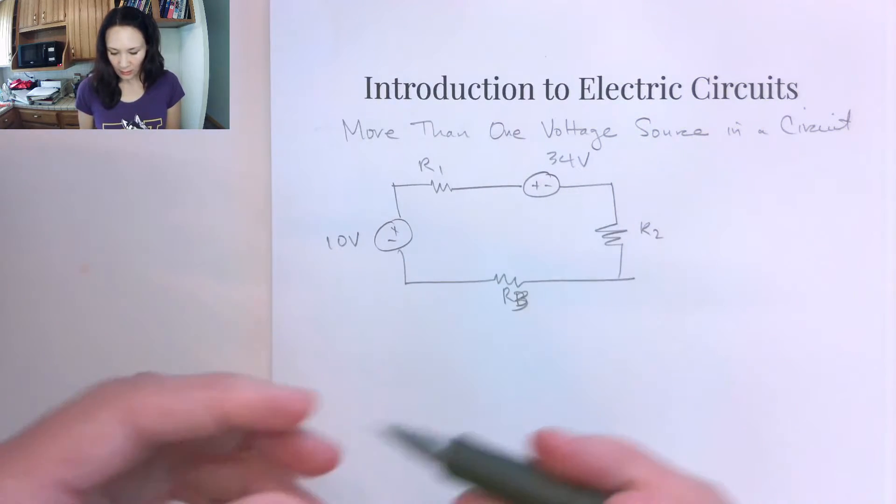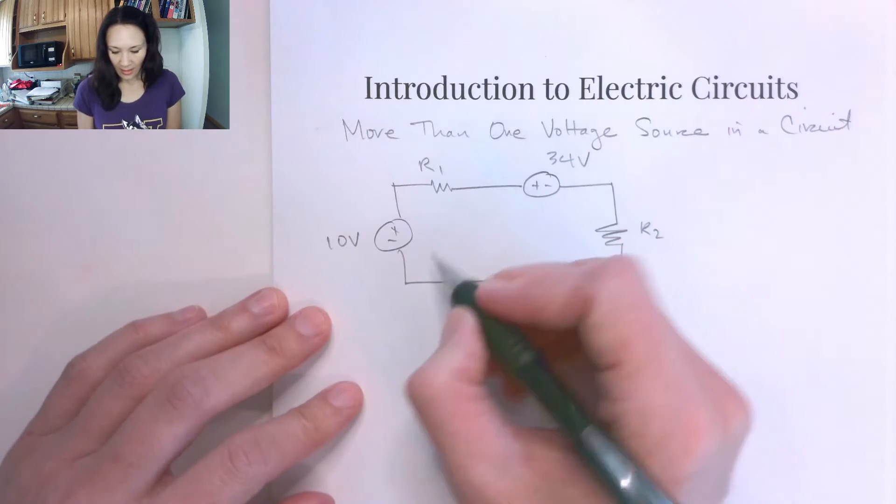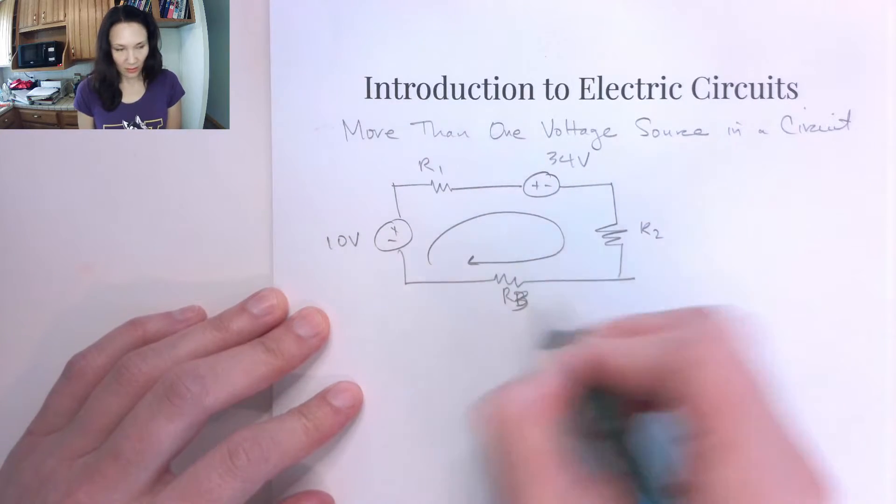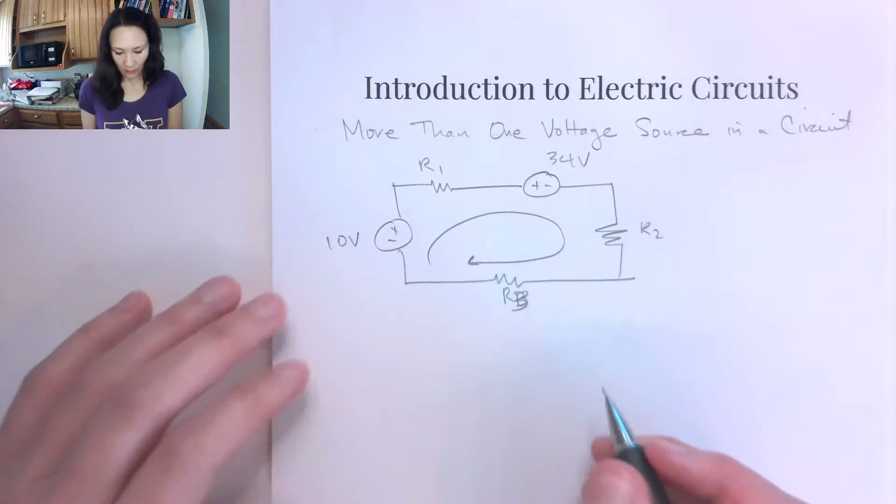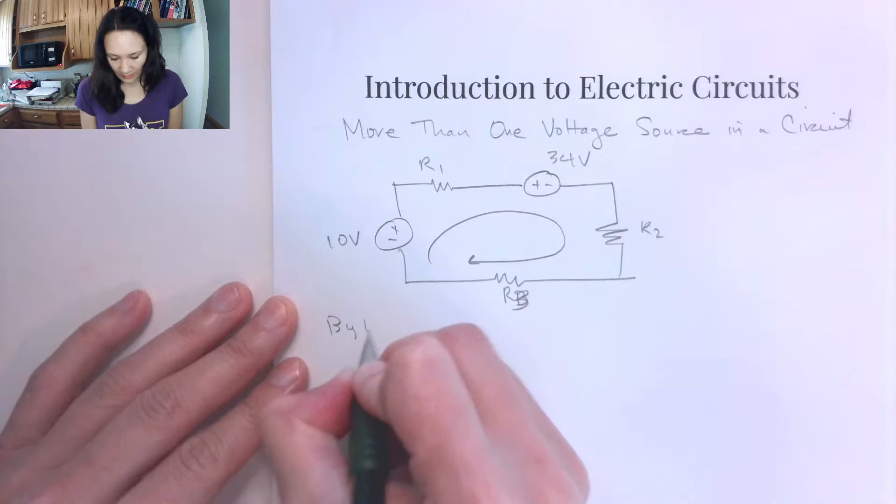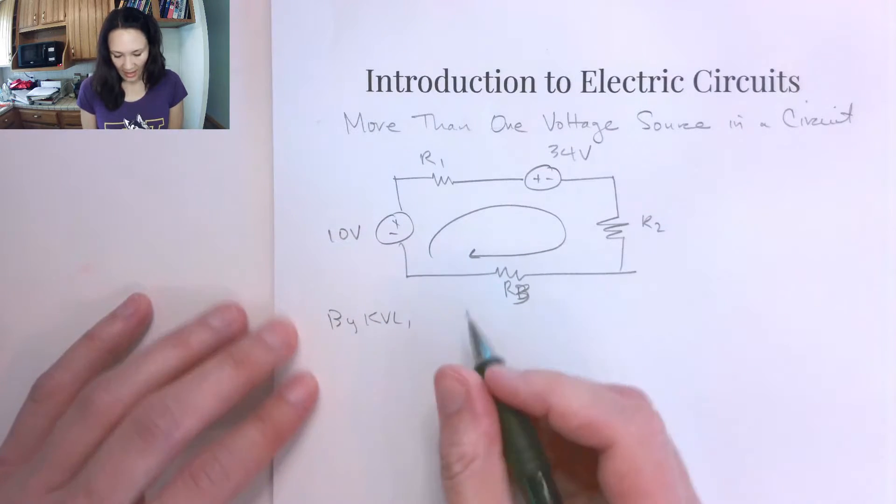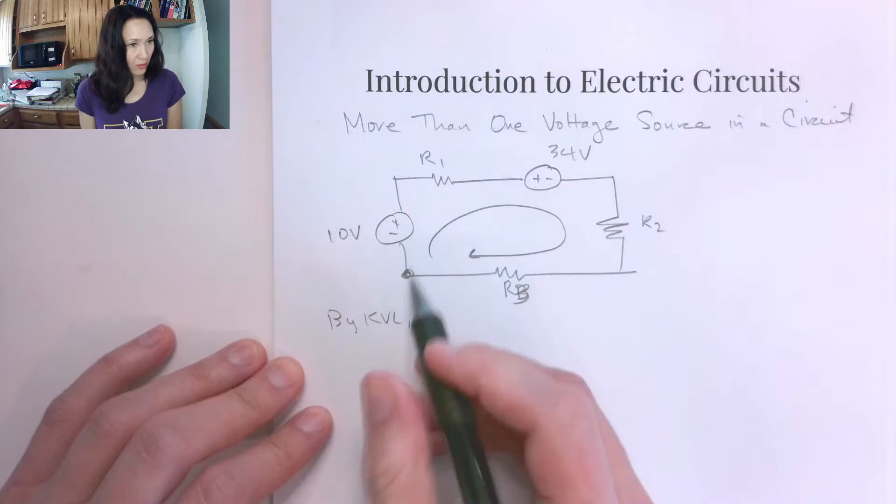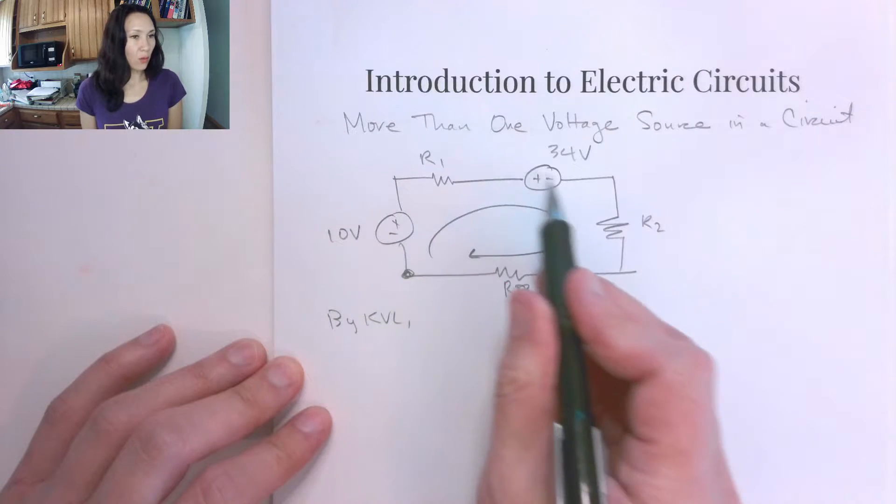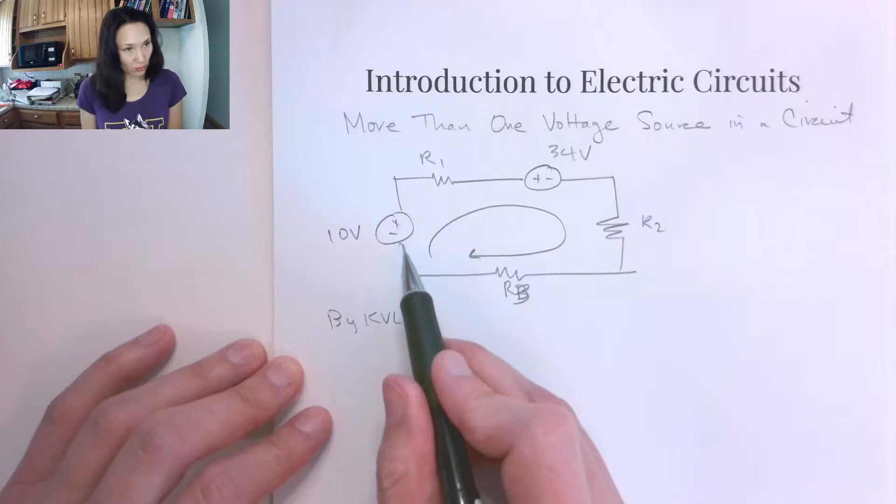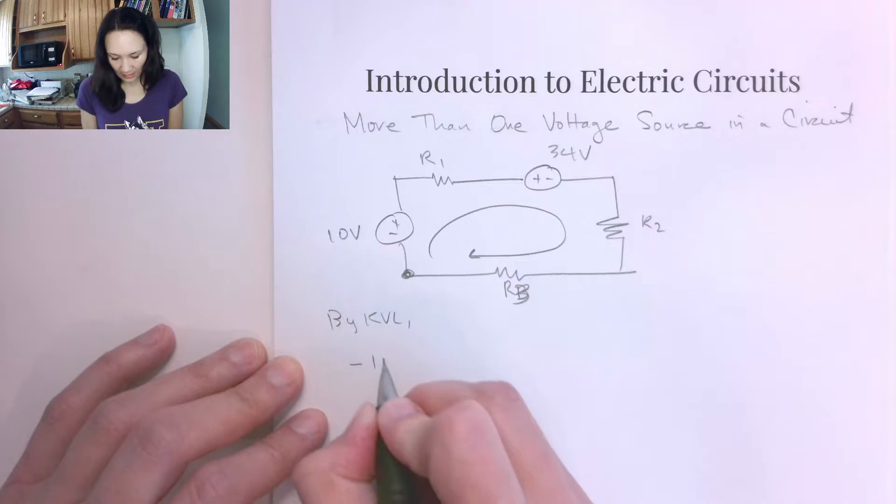We know as a consequence of KVL that if we add up all the voltage drops around a loop, we should get zero. So if I do that, I'll say by KVL, we have that following the passive sign convention, if I start here and go around the loop this way, I would enter this voltage source through the negative terminal.